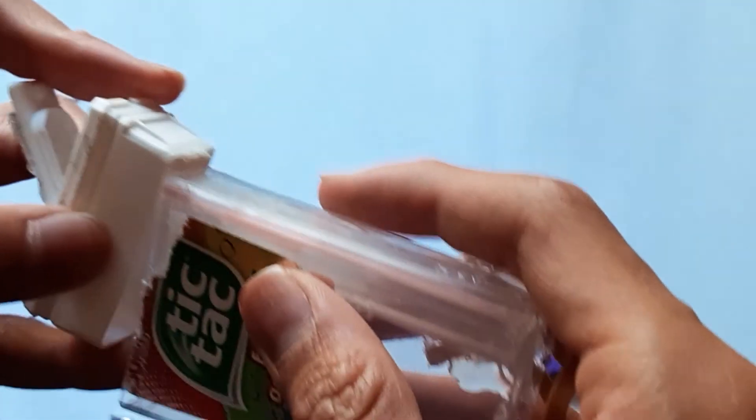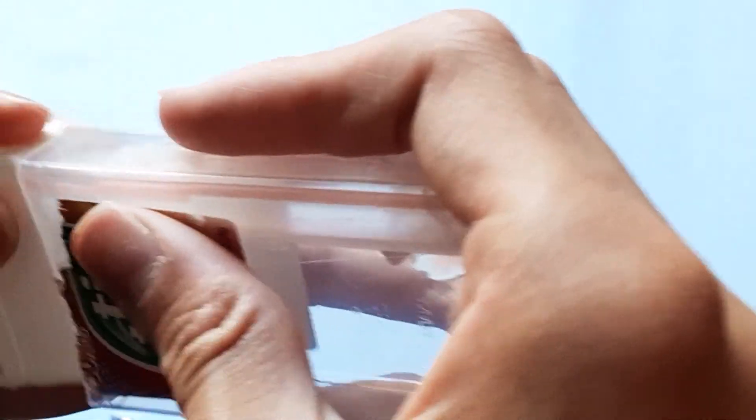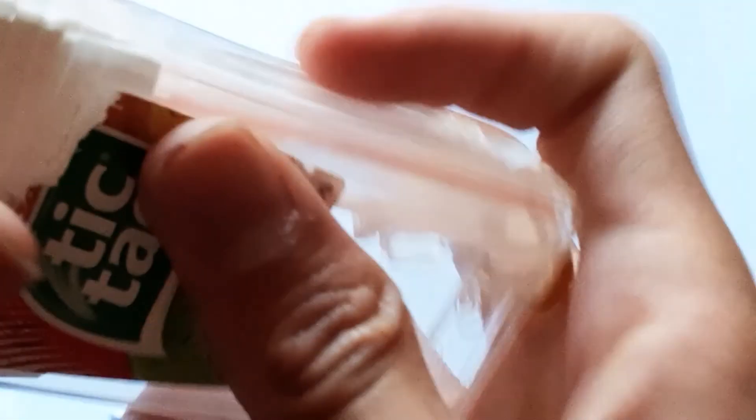Alright. Now, we are going to take the top, and we are going to cover it. Now, this one's going to be a little tricky, because what you want in the end is the end of that big straw to go through that hole. So it's going to take some maneuvering, but eventually, you should be able to get it like this. And that's pretty much it.